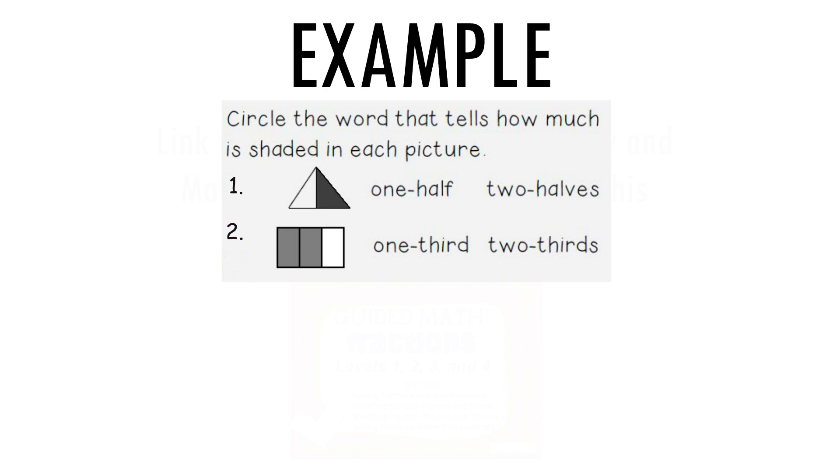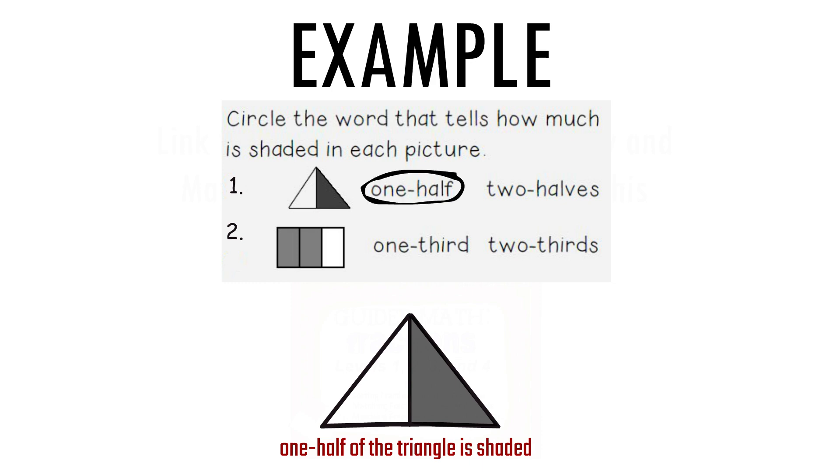Let's look at number one. I see a triangle that is cut into two equal pieces. So there are two halves present in the whole picture. Now let's look at the shaded portion. I only see one piece of the triangle shaded. So one half of the triangle is shaded. So this tells us our answer, one half.